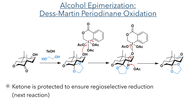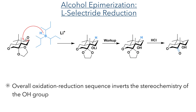In order to correct this, the authors carried out an epimerisation sequence. First, they protected the ketone as an acetal to ensure the next reaction would be regioselective. The alcohol was then oxidised to a ketone using Dess-Martin periodinane. The alcohol acts as a nucleophile towards the hypervalent iodine centre, and then deprotonation of the geminal hydrogen yields the target ketone. The ketone was then reduced back to an alcohol, this time with the alcohol in the axial position, unlike the previous equatorial position. The acetal was deprotected using aqueous acid to restore the original ketone, now that the stereochemistry of the alcohol had been inverted.